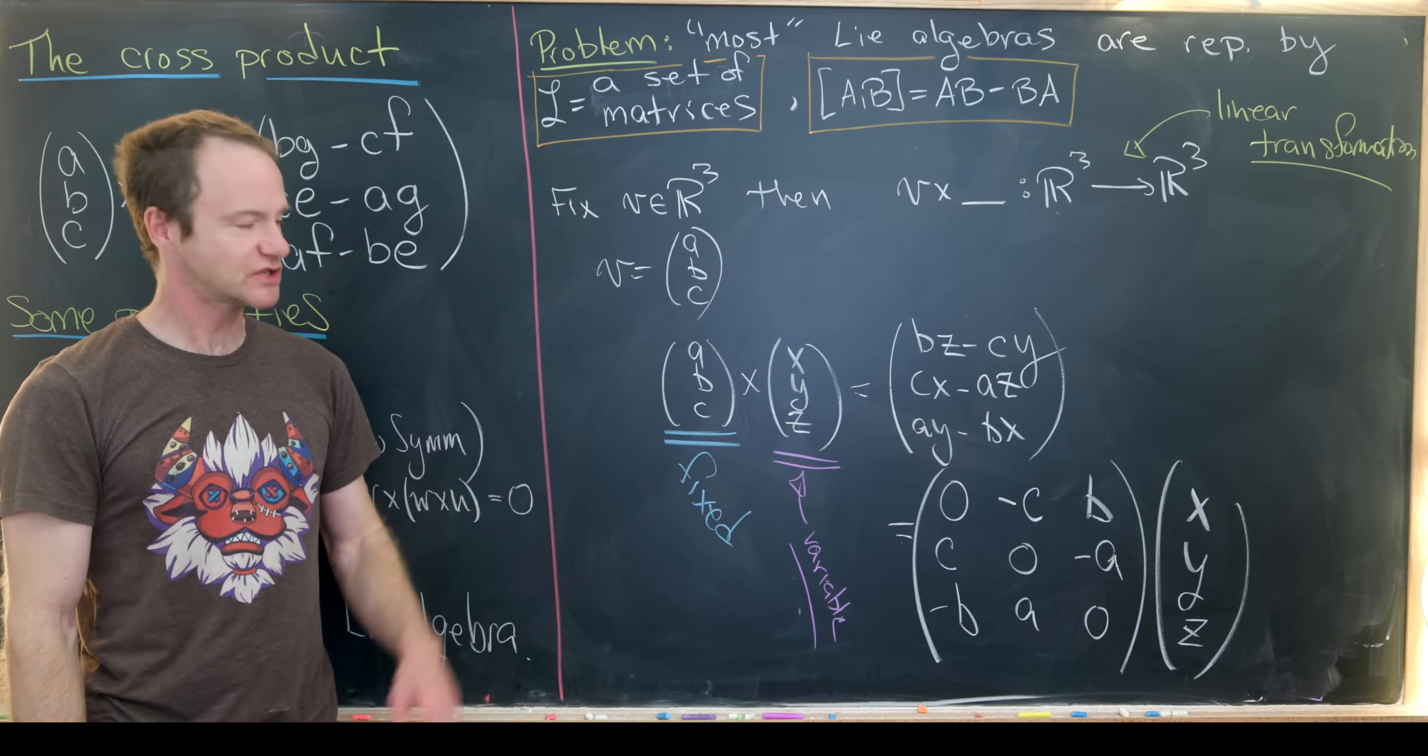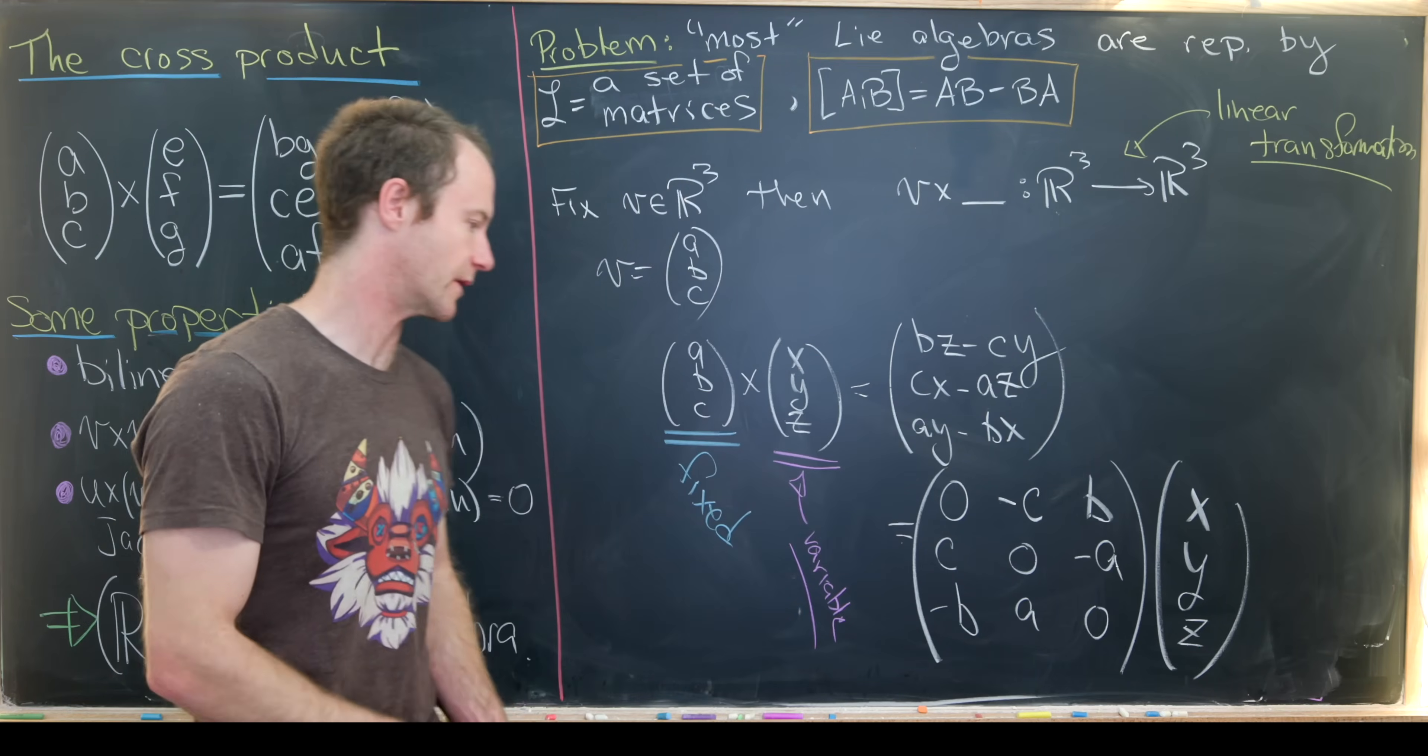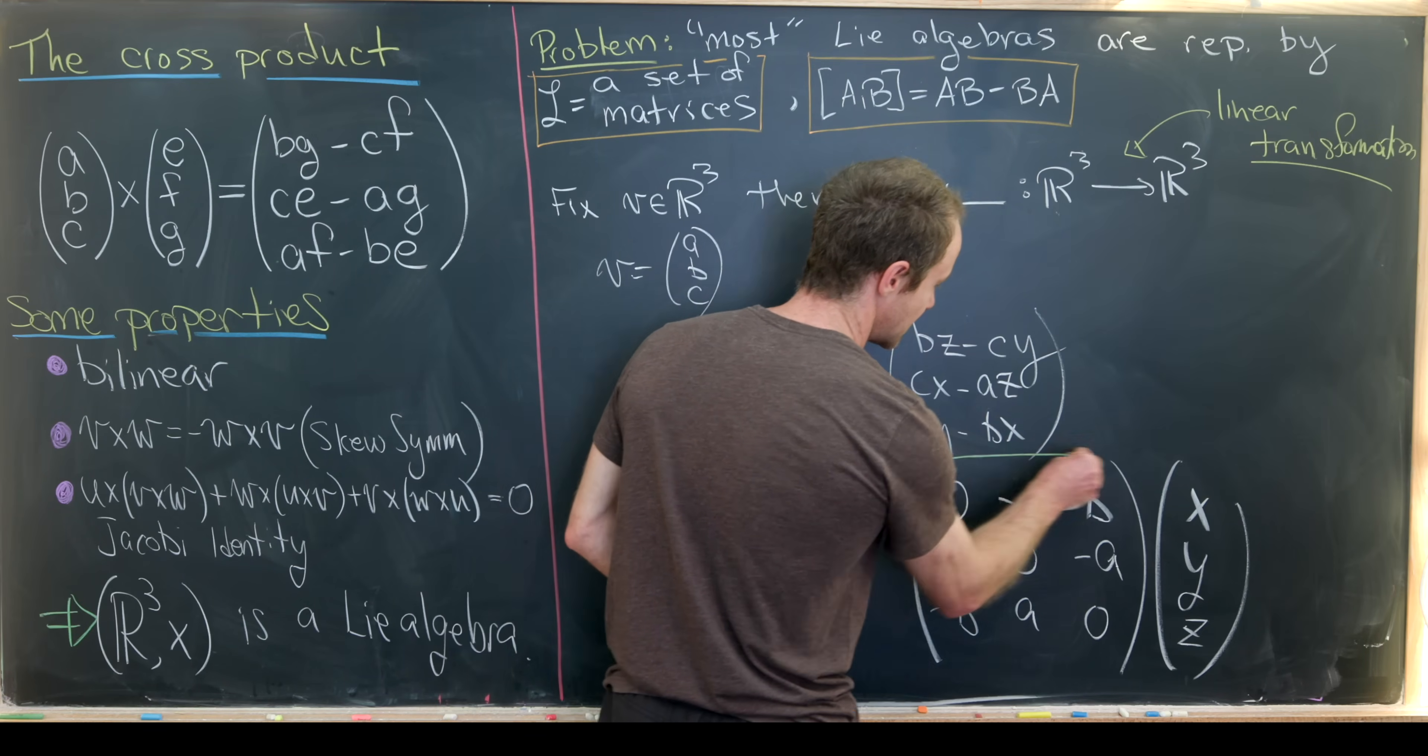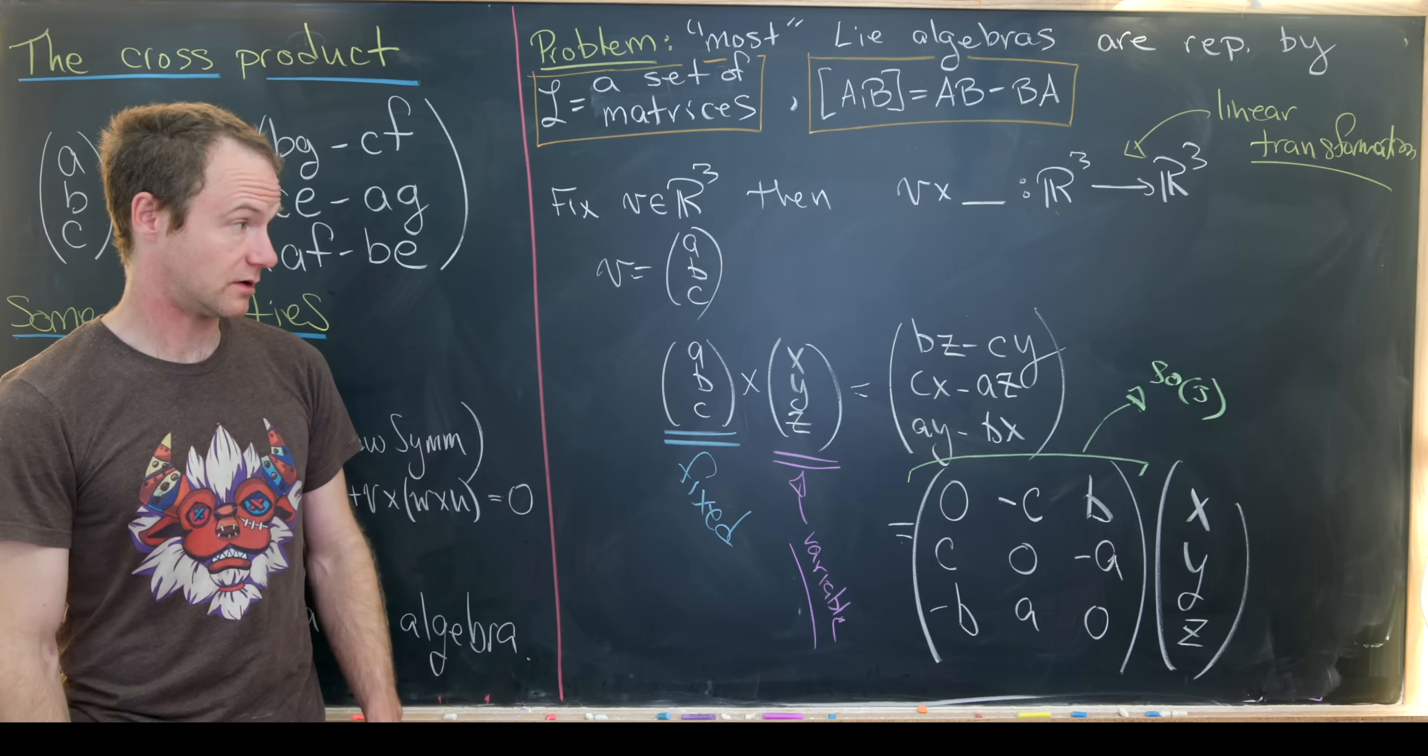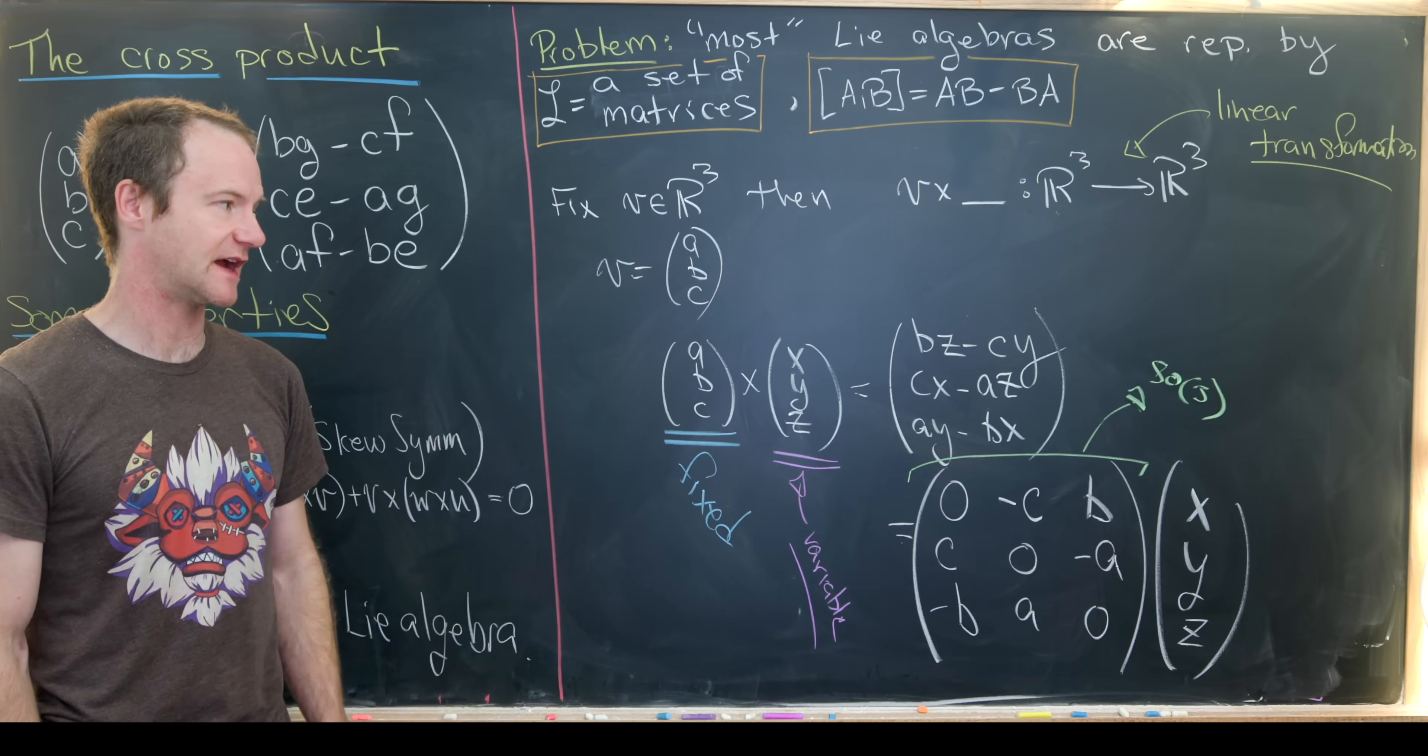So I think what's interesting about this is that this is a so-called skew symmetric matrix. But the word skew symmetric is given to this matrix and given to this property over here. So there's something going on there. Furthermore, the collection of all such matrices come from the matrix Lie algebra, which is called SO3. So that's the special orthogonal three-dimensional Lie algebra.